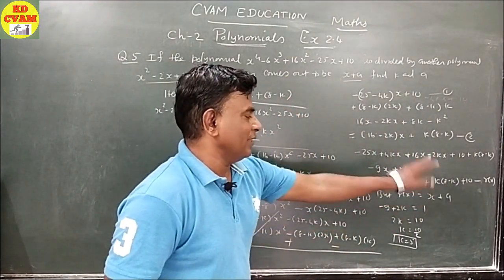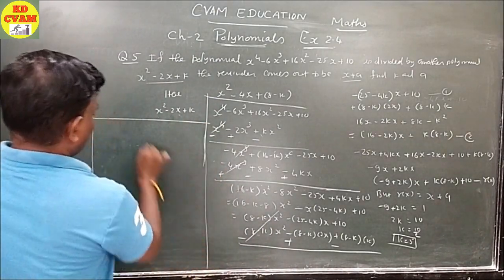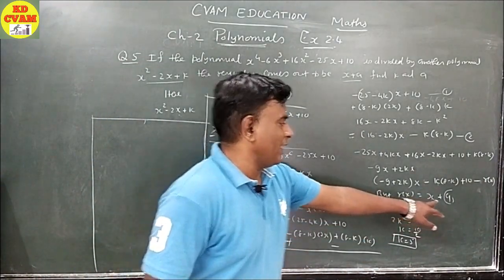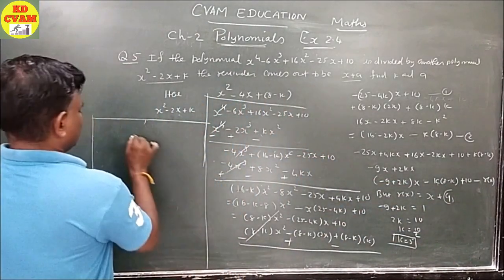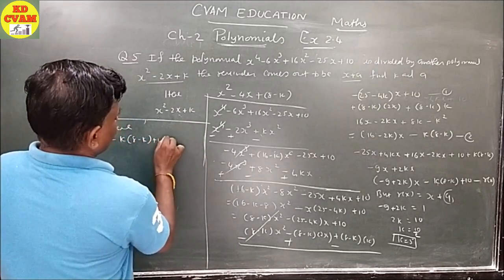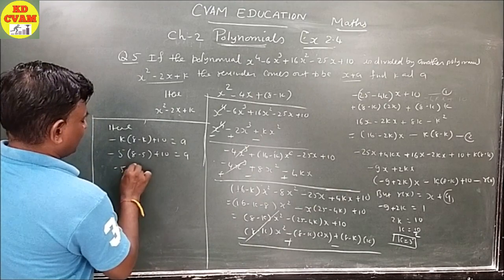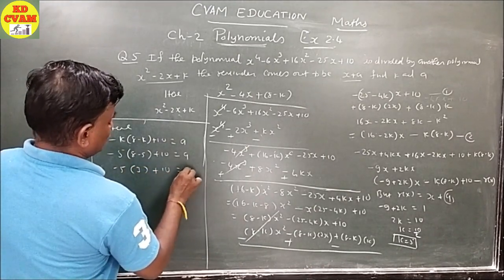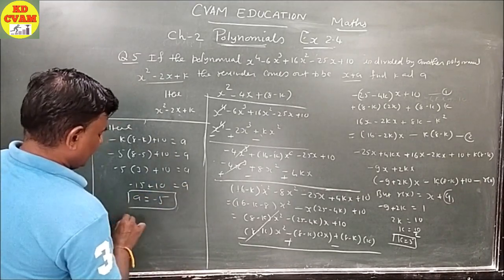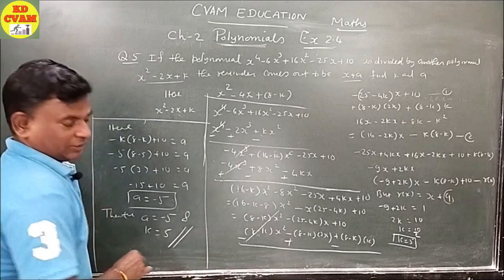Putting k = 5 into the constant: 8(5) - (5)² + 10 = 40 - 25 + 10... wait, constant = -k(8 - k) + 10 = -5(8 - 5) + 10 = -5(3) + 10 = -15 + 10 = -5. Therefore a = -5. So k = 5 and a = -5.